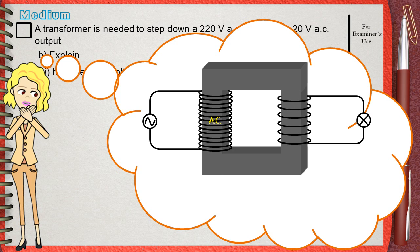This AC voltage causes what is known as a constantly changing magnetic field, also called a variable magnetic field. This constantly changing magnetic field is transferred through the iron core from the primary coil to the secondary coil. In the secondary coil, the magnetic field cuts the wires of the secondary coil, causing an induced voltage.